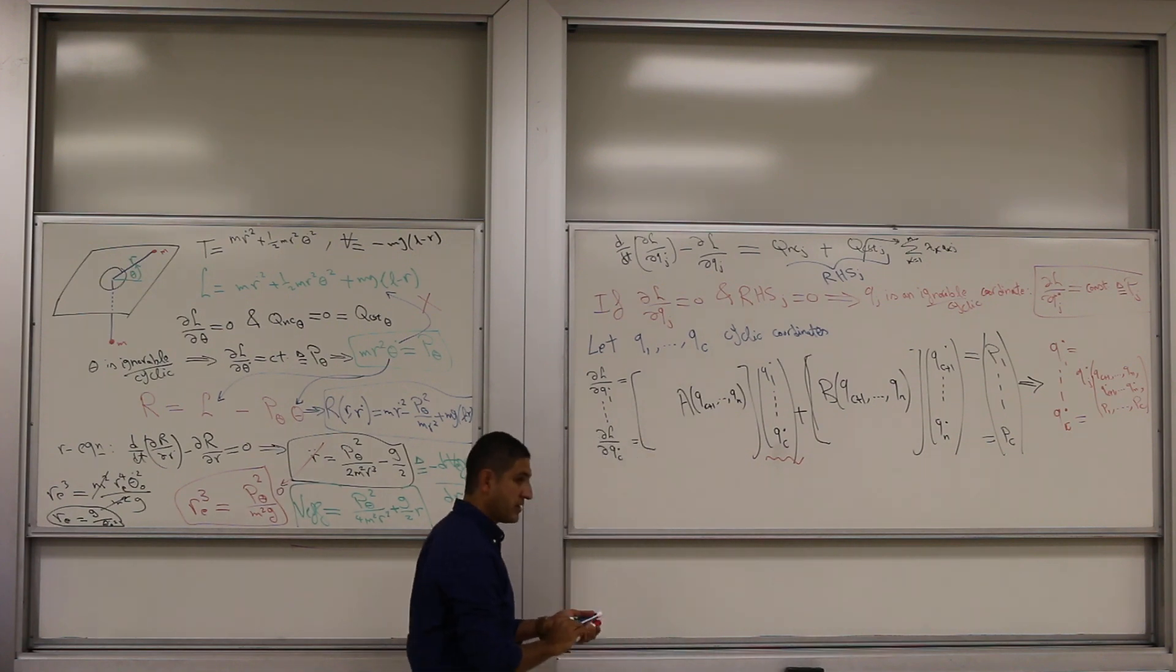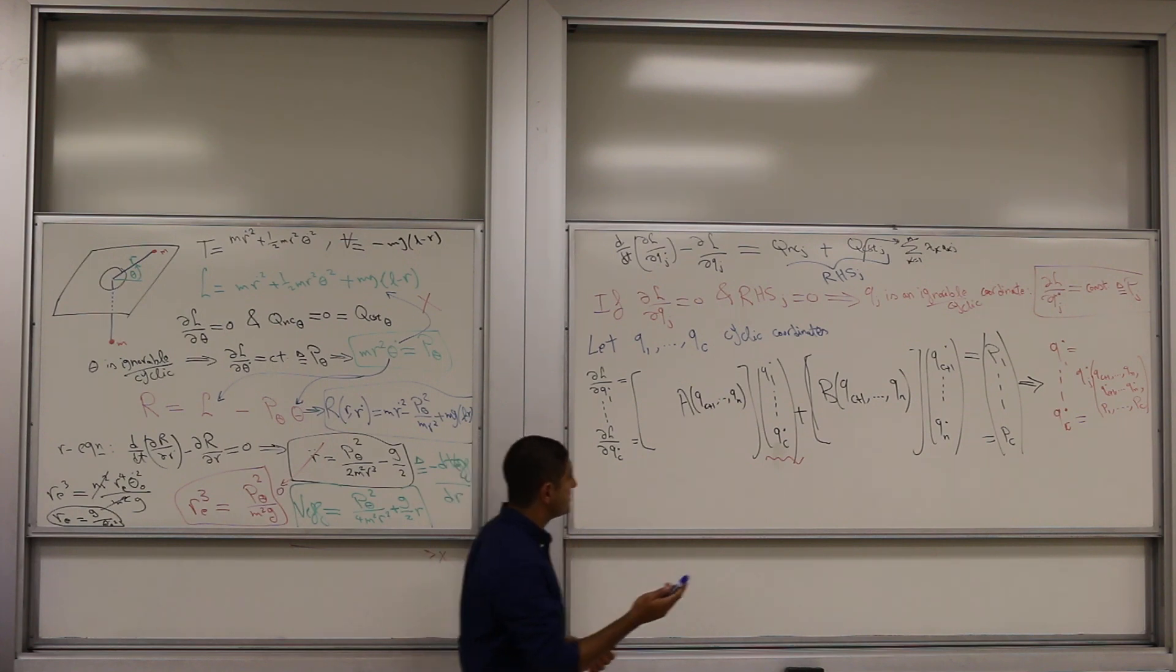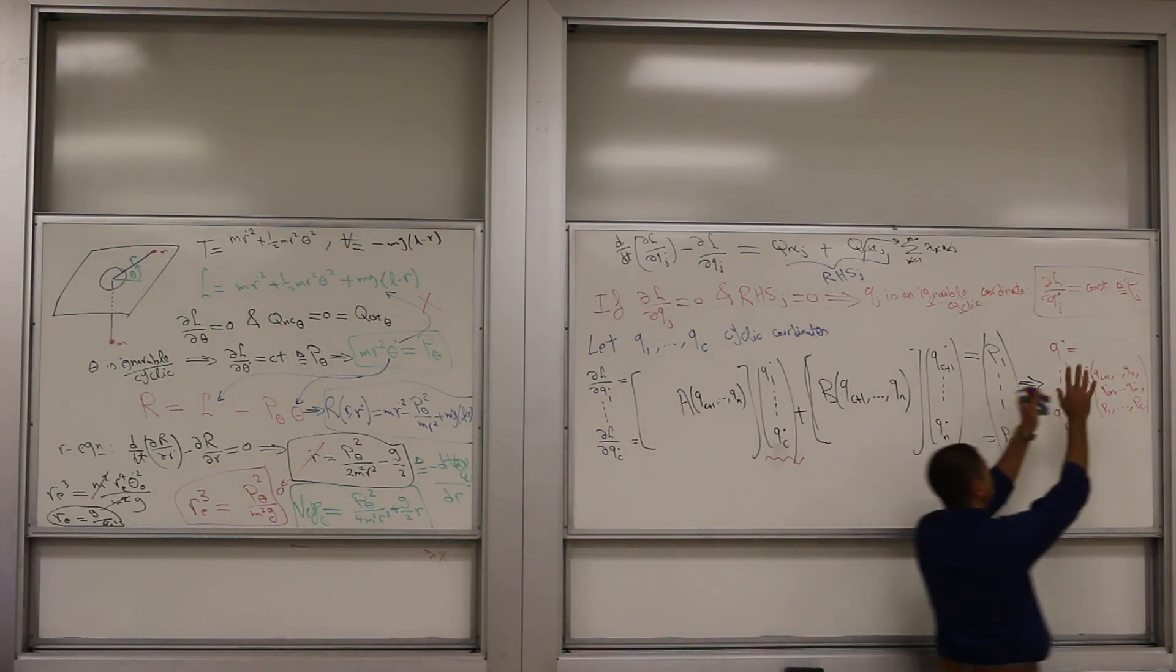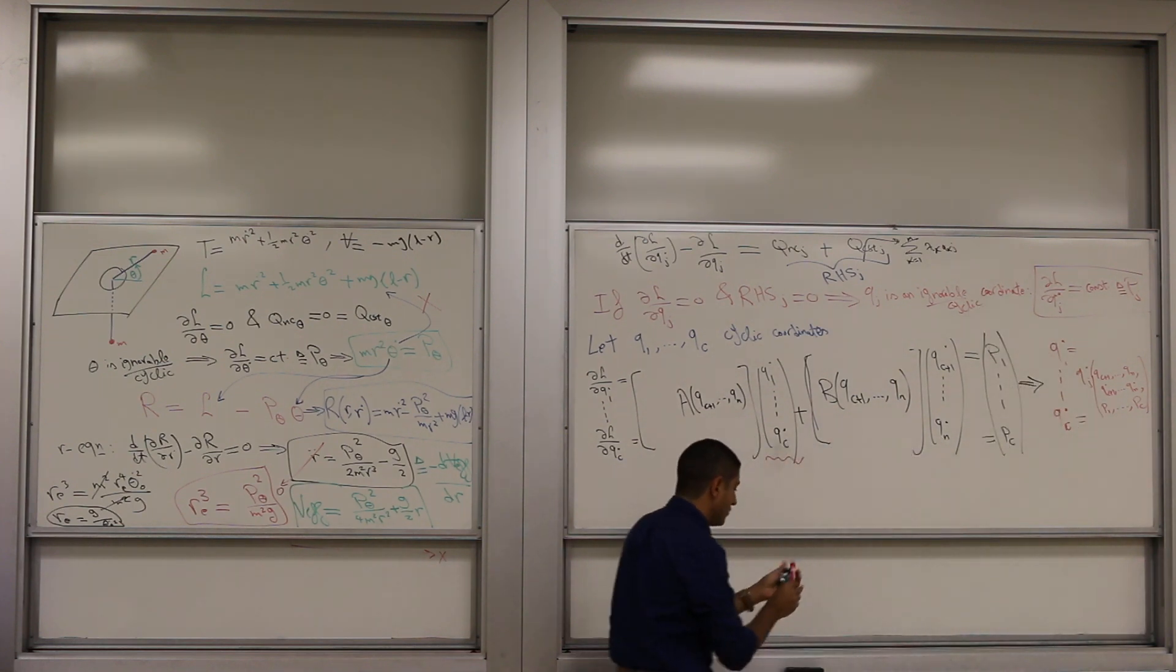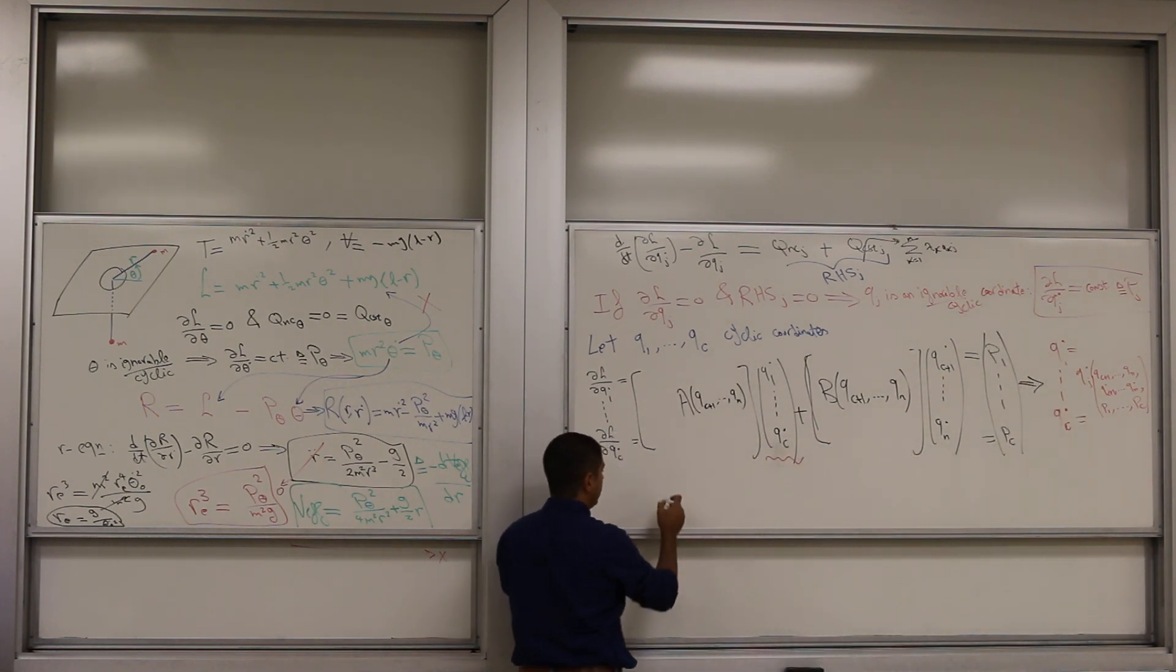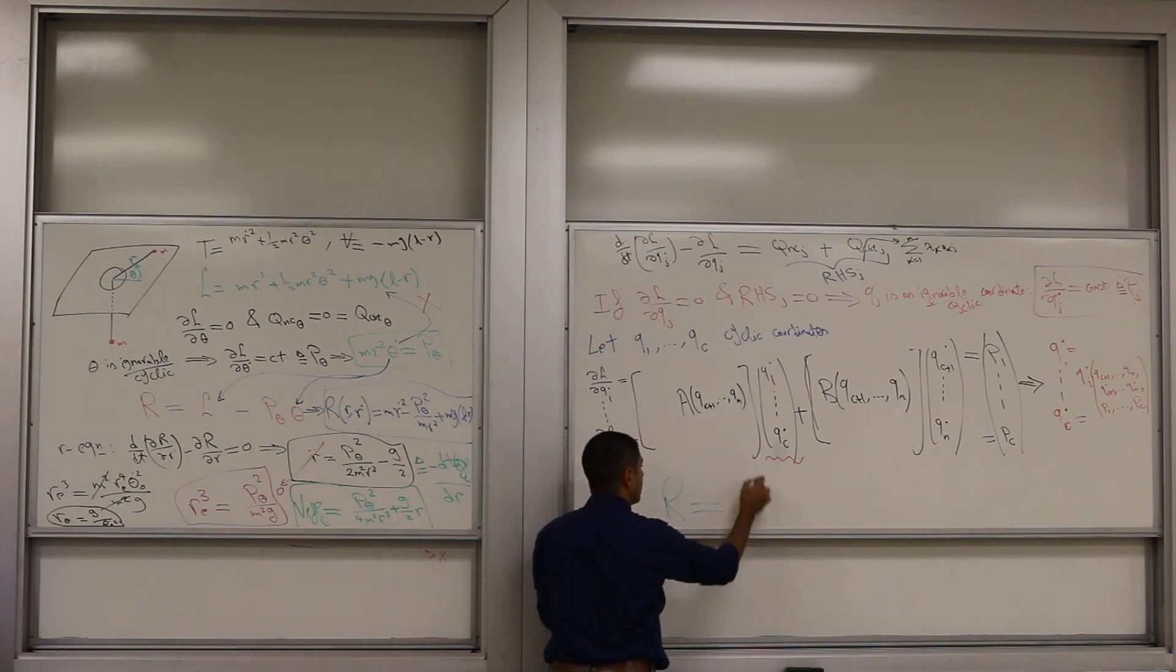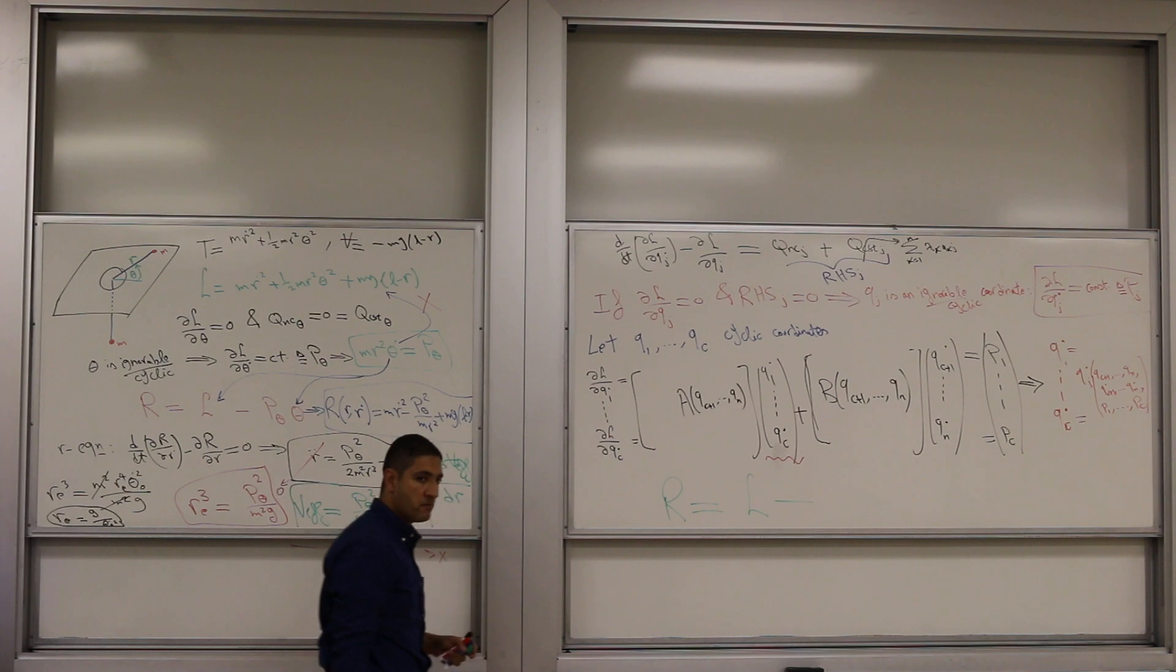If you have any question please stop me. What I told you before is that please, don't take this substitution and go substitute in your Lagrangian. Don't do that. No, what do we do? We define the Routhian to be your Lagrangian minus what?